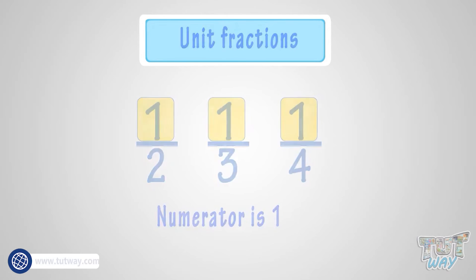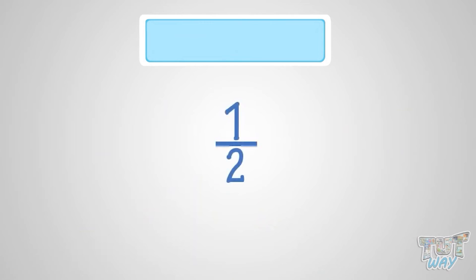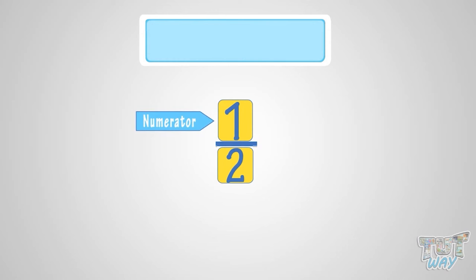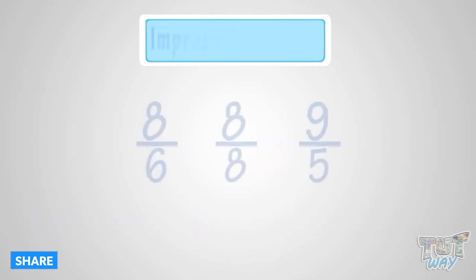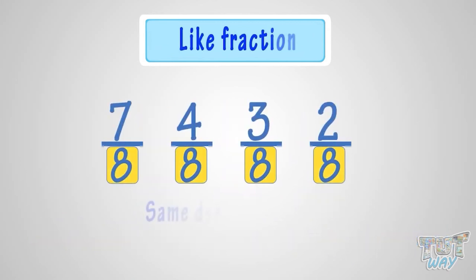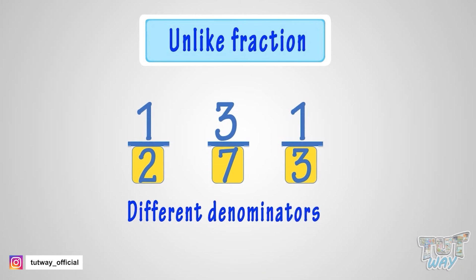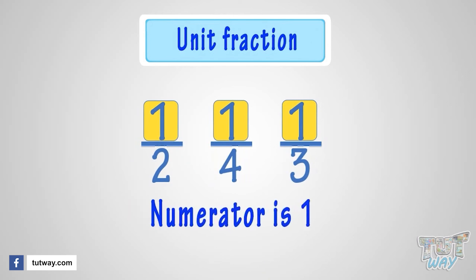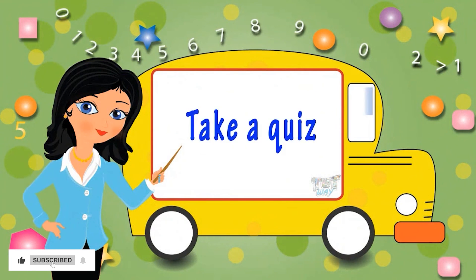So what have we learned? We have learned that fractions are parts of a whole and they are represented by two numbers — one above the line and one below the line. The number above the line is numerator and the number below the line is denominator. Fractions with smaller numerator are called proper fractions. Fractions with equal or bigger numerator are called improper fractions. Fractions with same denominators are called like fractions. Fractions with different denominators are called unlike fractions. A fraction with numerator one is called a unit fraction. Now go ahead and take a quiz to learn more. Bye-bye!